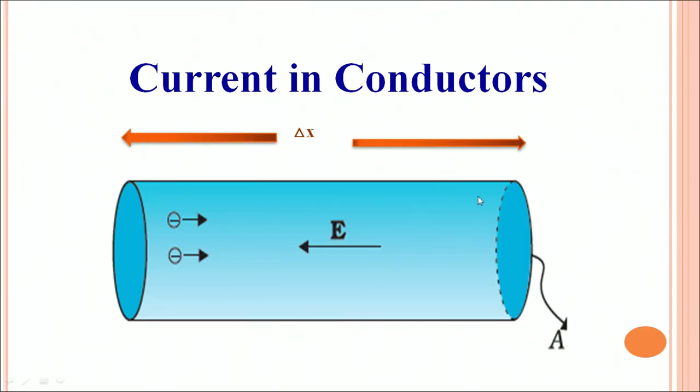Again, this is a schematic diagram of a conductor of length delta x. It has a cross sectional area A. You can see the charges are flowing, the negative charges are flowing in this direction and so the direction of electric current would be opposite because it always denotes the direction of flow of positive charge.